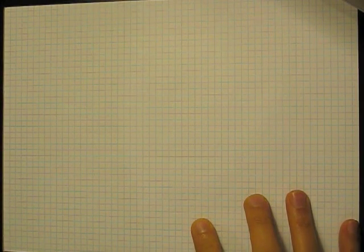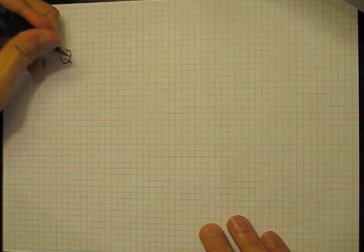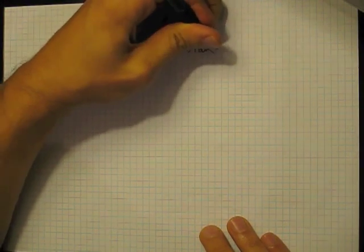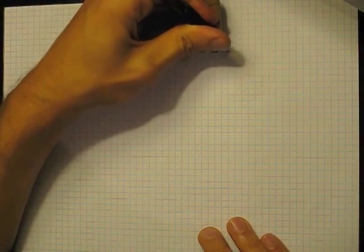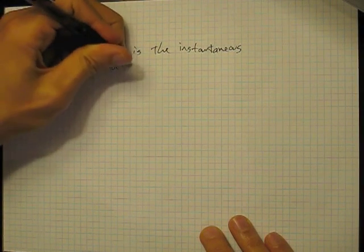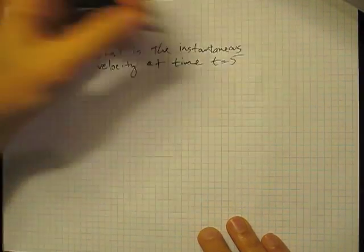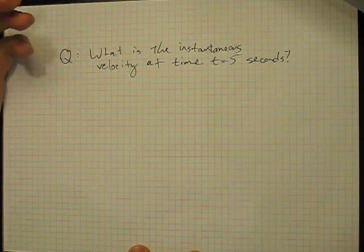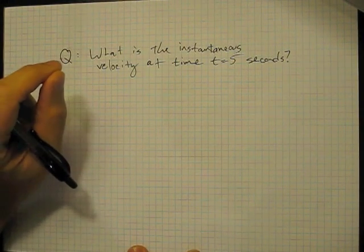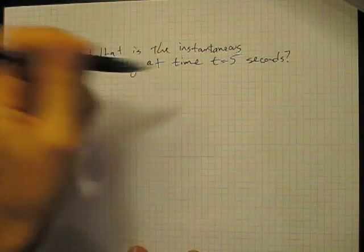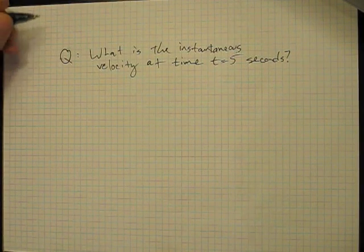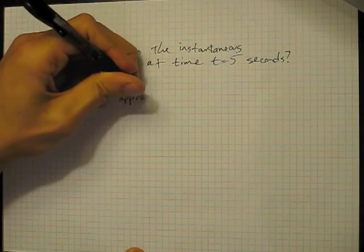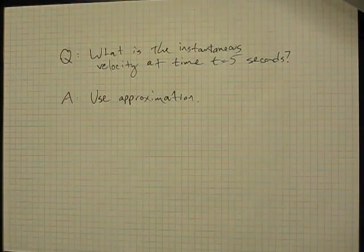So this was the average velocity from time equals 5 to time equals 6 seconds. All right, well, let's take a closer look, because if we want to talk about the instantaneous velocity, so this is our next question. Question, what is the instantaneous velocity? So what do we mean by that? I mean, what this really means is if the object had a speedometer attached to it, right at the time 5 seconds, the speedometer would be this instantaneous velocity. The readout of the speedometer would be the instantaneous velocity. So the way that we answer this is with approximation. So let me show you what I mean by that.